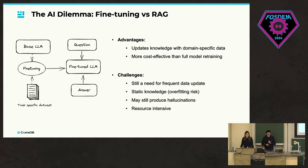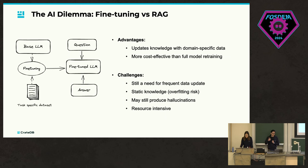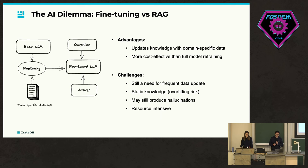The first option — I think everyone in the room has heard about it — is fine-tuning, where you give some input data and really change the parameters and weights in the foundational model so that the knowledge gets incorporated into your fine-tuned LLM. You put the domain knowledge in there, but there are also challenges. You don't solve the frequency issue of the data. It's still static knowledge. Research shows that one single wrong training data record can kill overall performance. And it doesn't solve the problem of hallucinations.